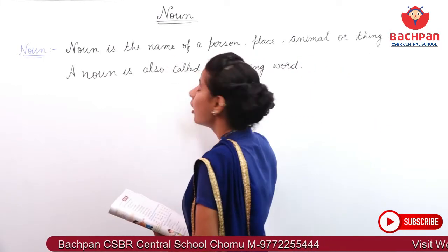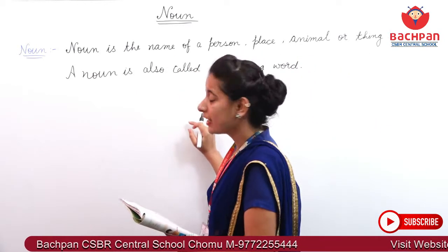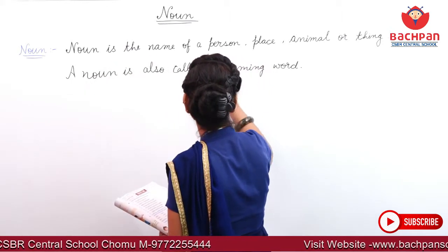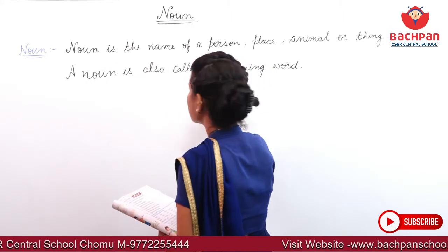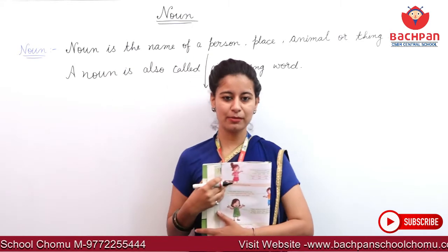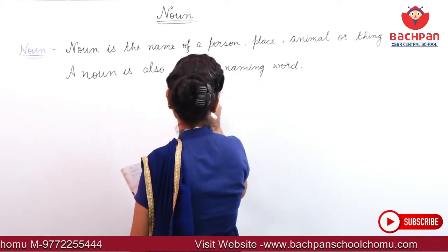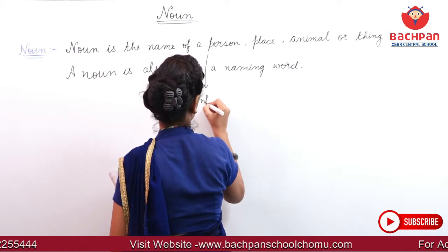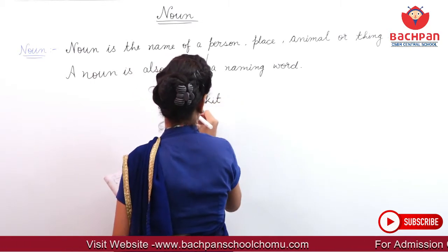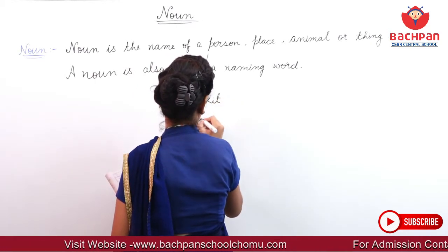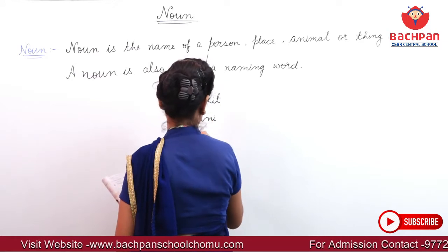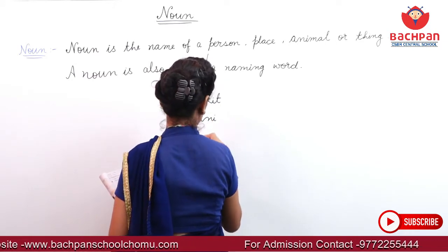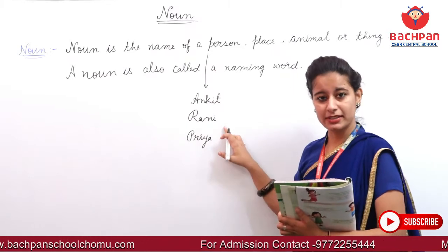You don't know name? Aapko pata hai? Name kya hota hai? Noun is the name — person. Kisi ka bhi person, name kisi ka bhi ho sakti hai. Jaise aapka name hai — Amgit, Rani, Tia. Toh ye kya hua? Person.